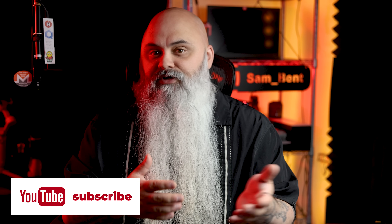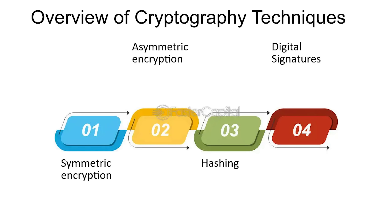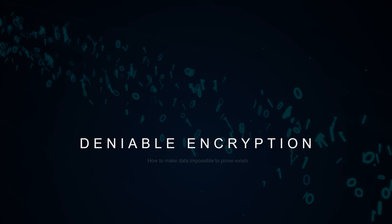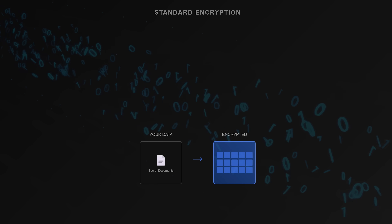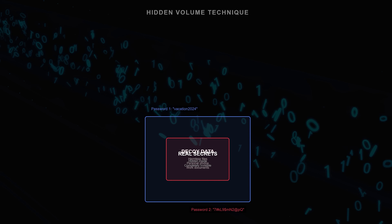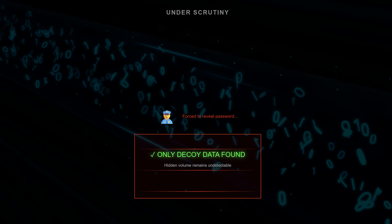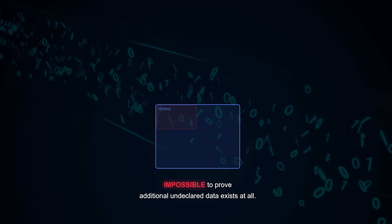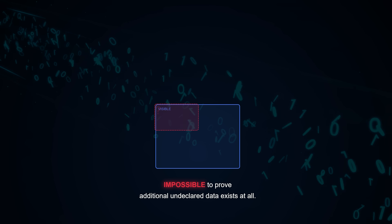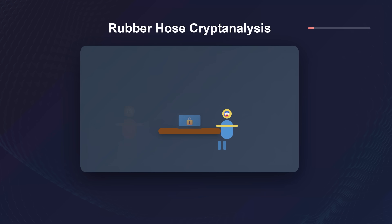The art of hiding secrets so well that you can convincingly claim they never actually existed. Deniable encryption is a class of cryptographic techniques that allow users to encrypt data in such a way that the existence of certain information can be basically denied under direct scrutiny. The goal extends far beyond keeping unauthorized users out — it's about making it impossible to prove additional undeclared data exists at all. The concept emerged in the early 1990s when researchers began exploring ways to protect users against rubber hose cryptanalysis.